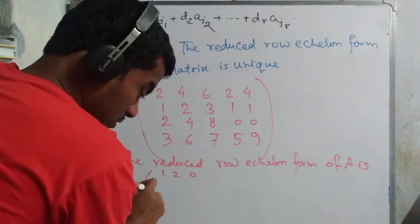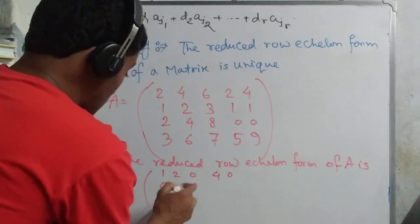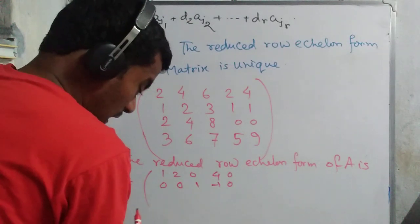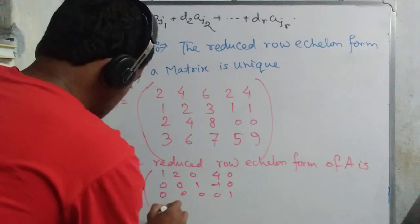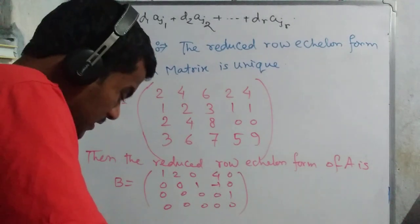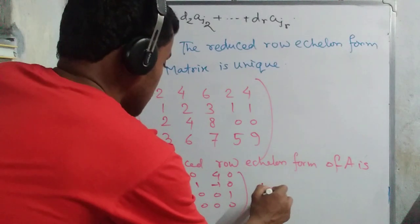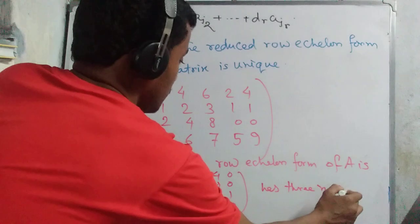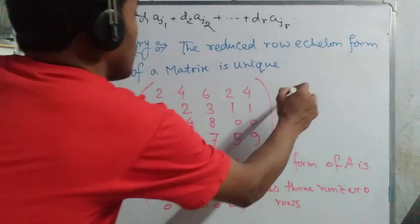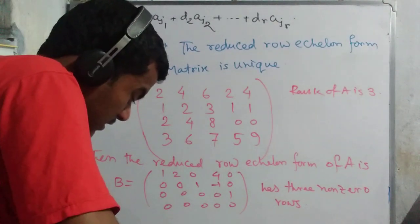The reduced row echelon form of A is B, where B equals: row 1 is [1, 2, 0, 3, 0], row 2 is [0, 0, 1, -1, 0], row 3 is [0, 0, 0, 0, 1], row 4 is [0, 0, 0, 0, 0]. So A reduces to B. We see that B has three non-zero rows, so the rank of A is 3.